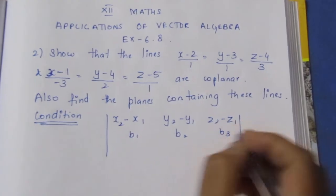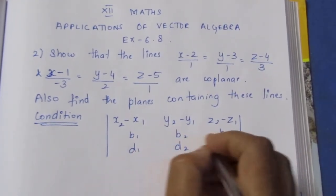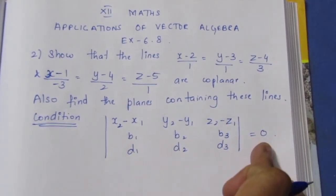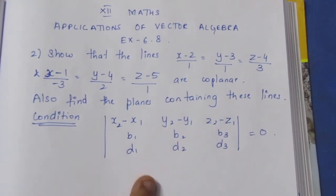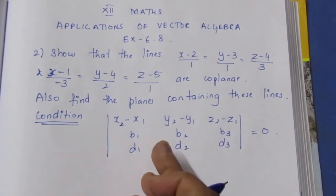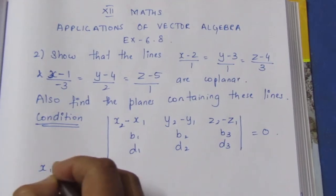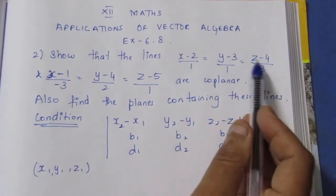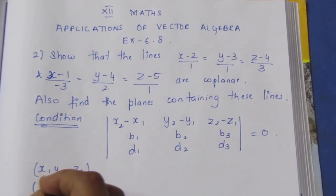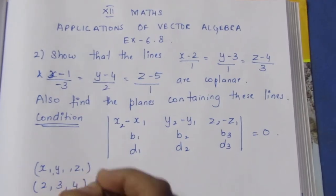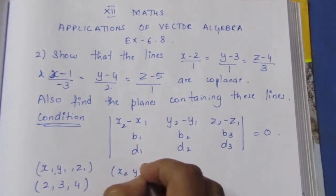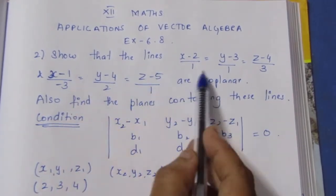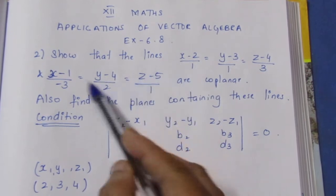The Cartesian formula uses b1, b2, b3 and d1, d2, d3. The determinant must be equal to 0. If it equals 0, then the lines are co-planar.